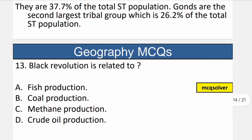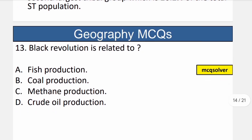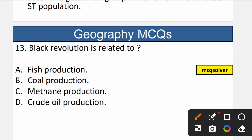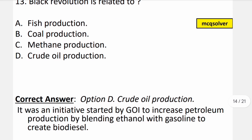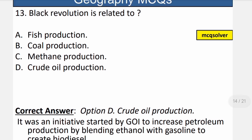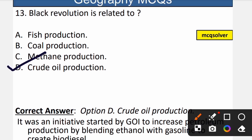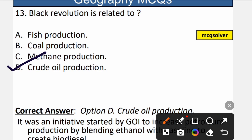Question number 13: Black revolution is related to what? The correct option is D — crude oil production. The Black Revolution was an initiative started by the Government of India to increase petroleum production by blending ethanol with gasoline to create biodiesel. So D is the correct option.